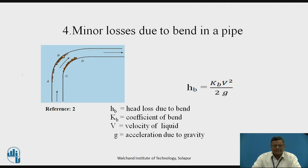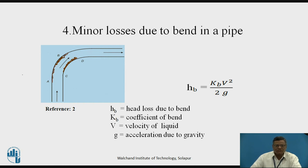Minor losses due to the bend in a pipe. In case of the bend, we have the fluid flowing vertically upwards initially and then changing direction towards the right-hand side. When the liquid changes direction, a head loss occurs. It is purely due to direction change — there is no change in cross-sectional area. The minor loss due to a bend in a pipe is given by: HB = KB × V²/2g, where KB is the coefficient of the bend.